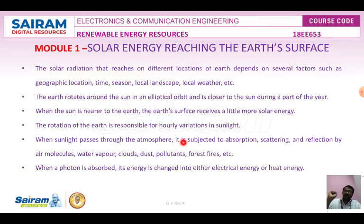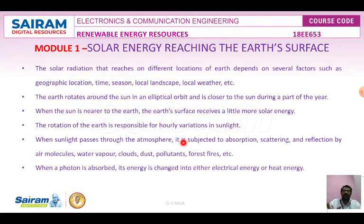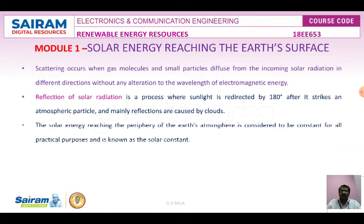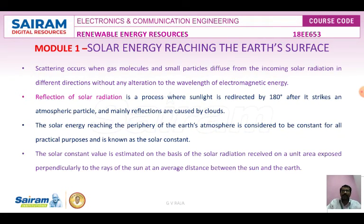When sunlight passes through the atmosphere, it is subject to absorption, scattering, and reflection by air molecules, water vapor, clouds, dust materials, pollution, and forest fires. When photons are absorbed, the energy is changed into electrical energy or heat energy. Scattering occurs when gas molecules and small particles diffuse the incoming solar radiation in different directions.